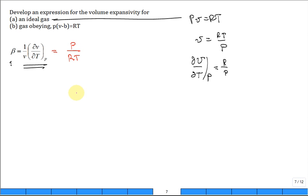Times the second term, which is R over P. The R's cancel, the P's cancel, and we're left with a very simple relationship that beta is equal to 1 over T.